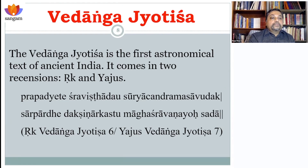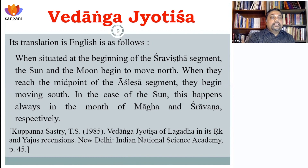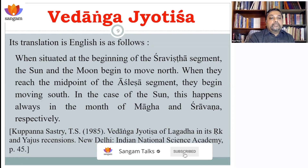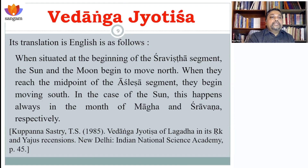In the Rik recension, it is verse 6, and in the Yajus it is a different verse. The translation by Kuppanna Shastri is a very famous translation and explanation of Vedanga Jyotish of Lagadha. The verse tells you that the winter solstice was at the beginning of the Shravishtha nakshatra — that is a crystal clear statement which can be used for precise astronomical dating.